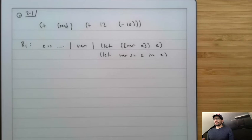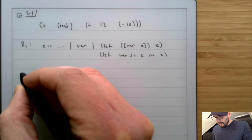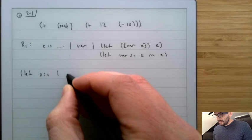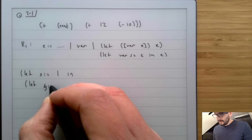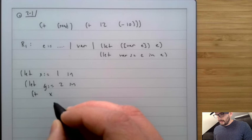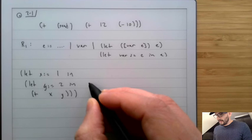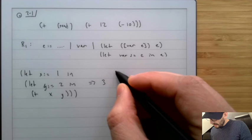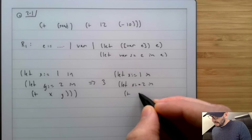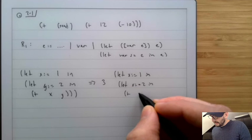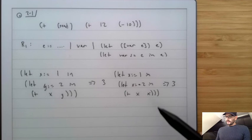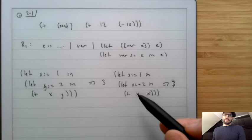Let's start with the intuition. If we write let x equal 1 in let y equal 2 in plus x y, this program evaluates to 3. Now if we have let x equals 1 in let x equals 2 in plus x x, this evaluates to 4, because when you see a variable you look at the innermost binding. This is called shadowing.